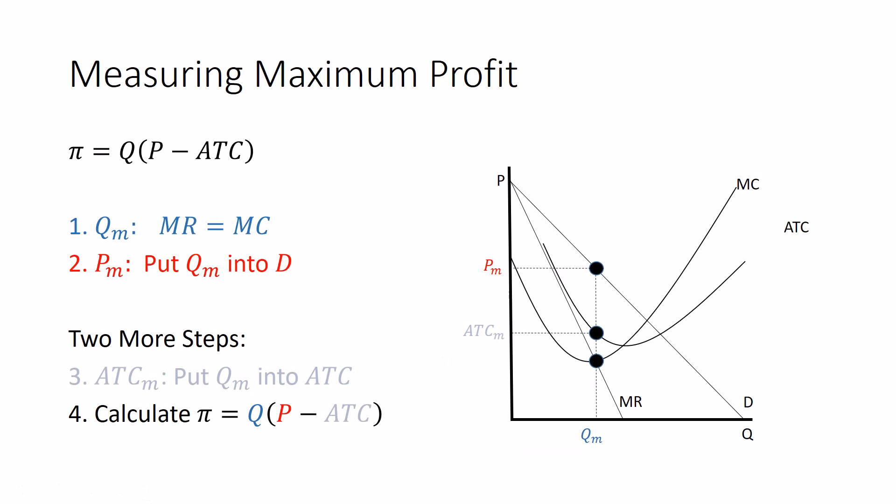And so now we're going to calculate our profit, which is quantity times price minus average total cost, is actually on our graph a rectangle. The base of this rectangle is QM, is the monopoly quantity. The height of this rectangle is the gap between price and average total cost. The rectangle itself is everything between price and average total cost up until the quantity that the monopolist sells. That is profit.